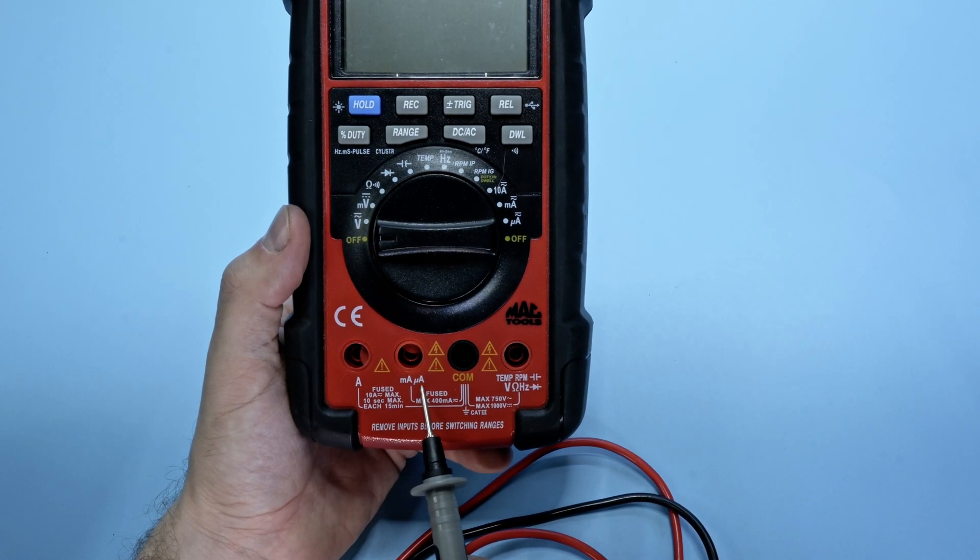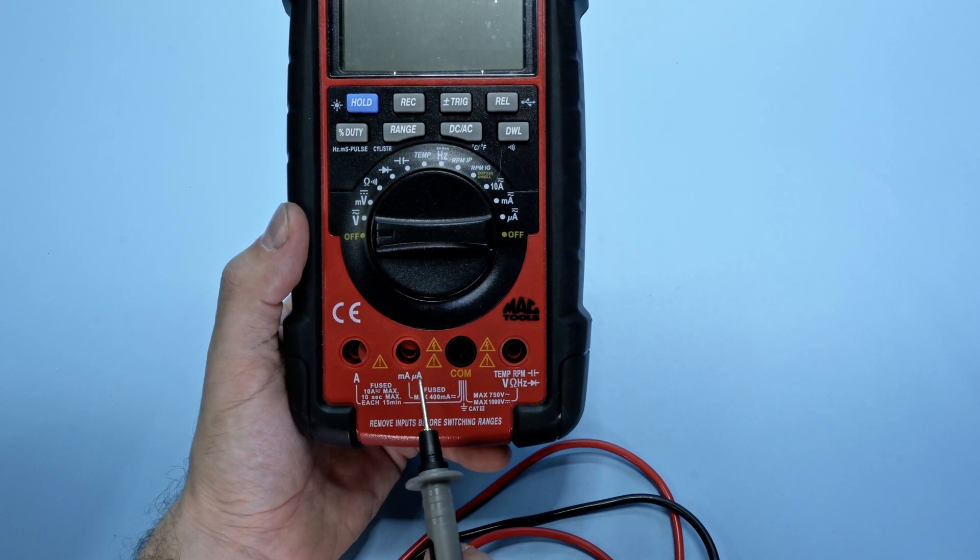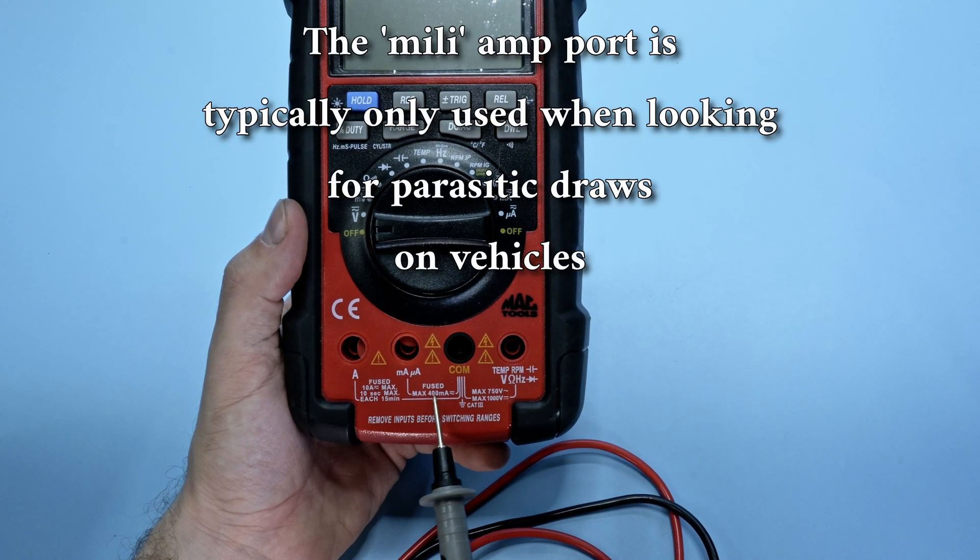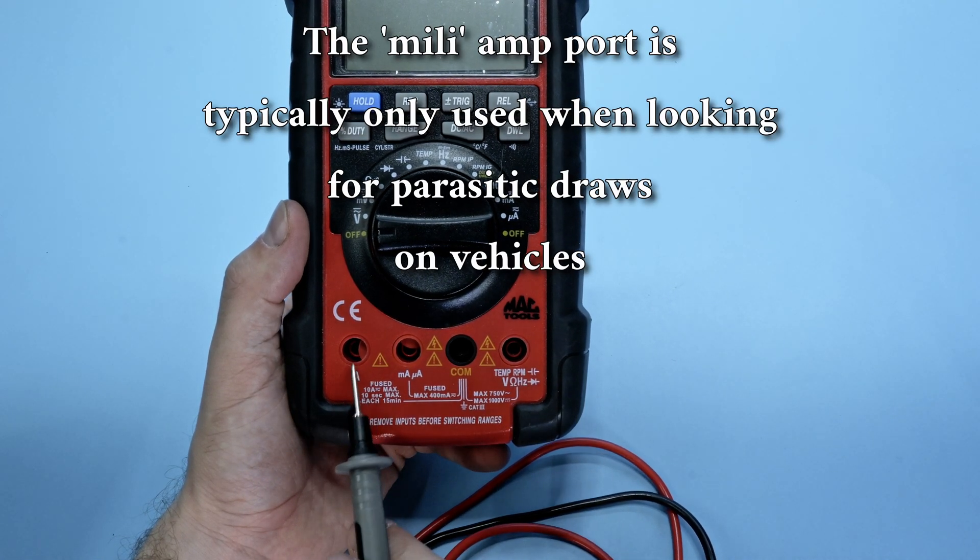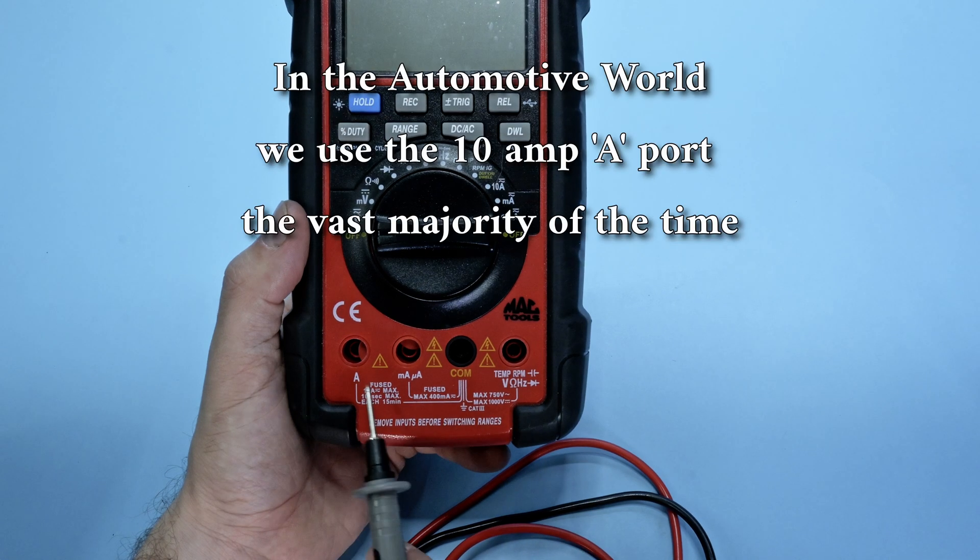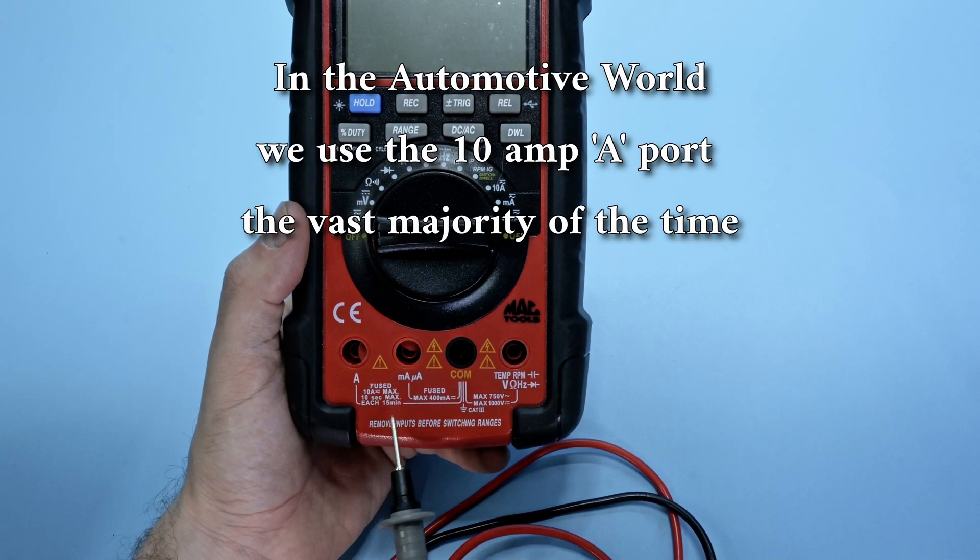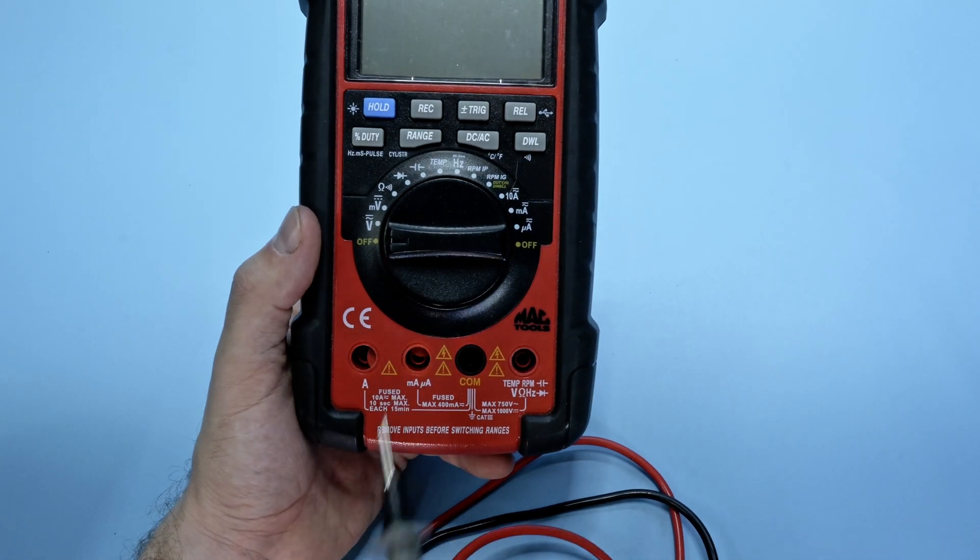So you can see that my milliamps and microamp fuse is only a 400 milliamp rated fuse. And then my 10 amp fuse over here, I am good for, let's see, 10 amps for 10 seconds max. If I overload that, the fuse internally is going to pop. And let me show you what that looks like on another meter.